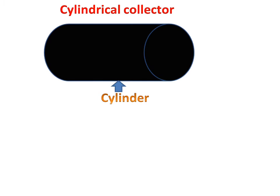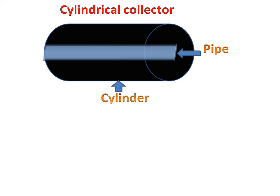Today we will discuss the cylindrical collector, how it works, and how it stores energy. First, we'll discuss the parts of the cylindrical collector. We have a cylinder and a pipe which is inside the cylindrical collector. The cylinder is blackened on all surfaces.